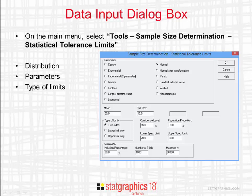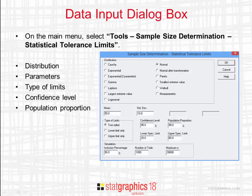You next indicate the type of limits that you'll be estimating. You can select two-sided tolerance limits, a lower limit only, or an upper limit only.